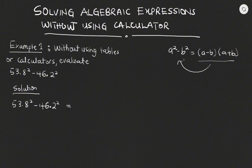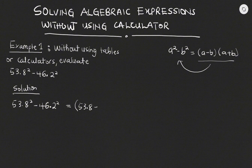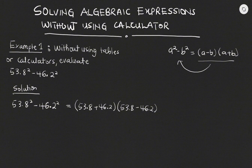Now using this idea or this expansion, we are going to write what we have over here in this particular form. So we'll have into bracket 53.8 plus 46.2, then another bracket 53.8 minus 46.2. So 53.8 plus 46.2 will give us 100, then multiplied by 53.8 minus 46.2 will give us 7.6.